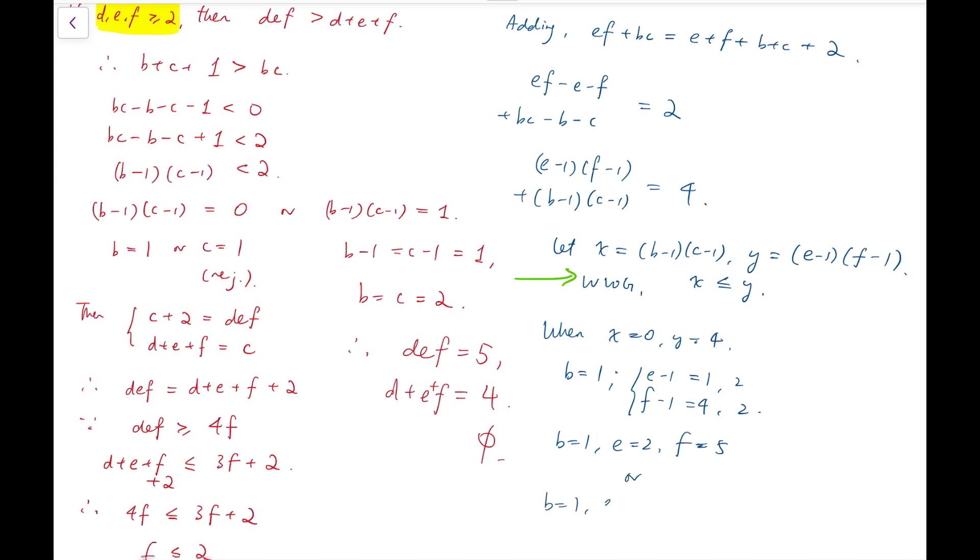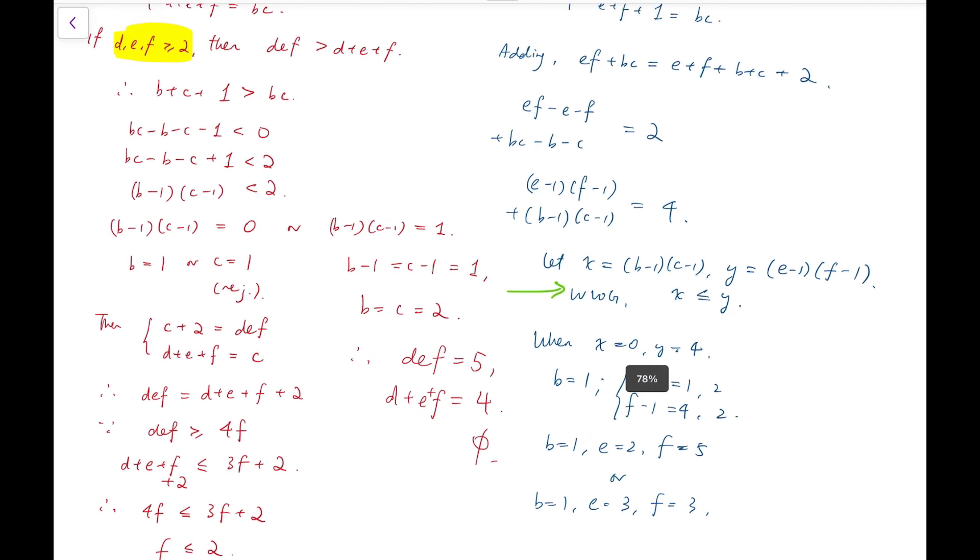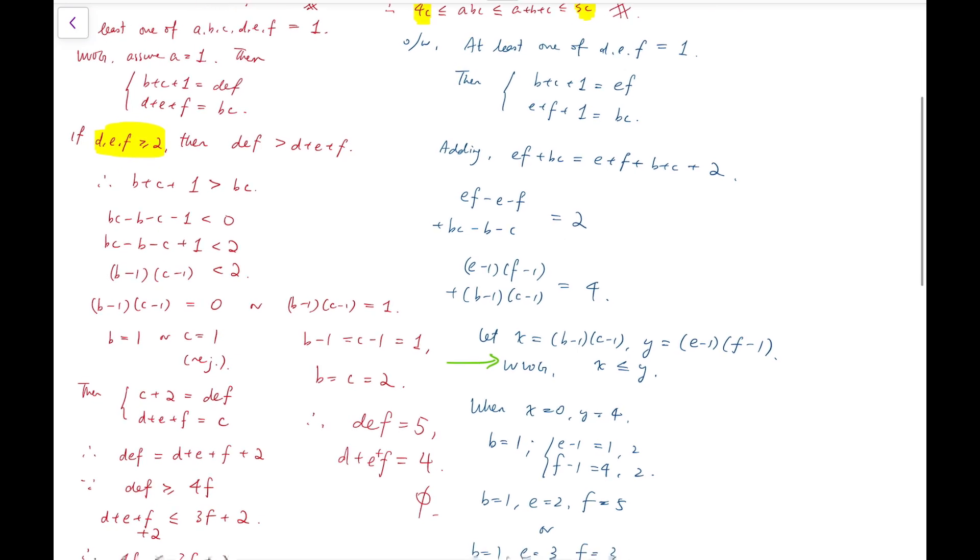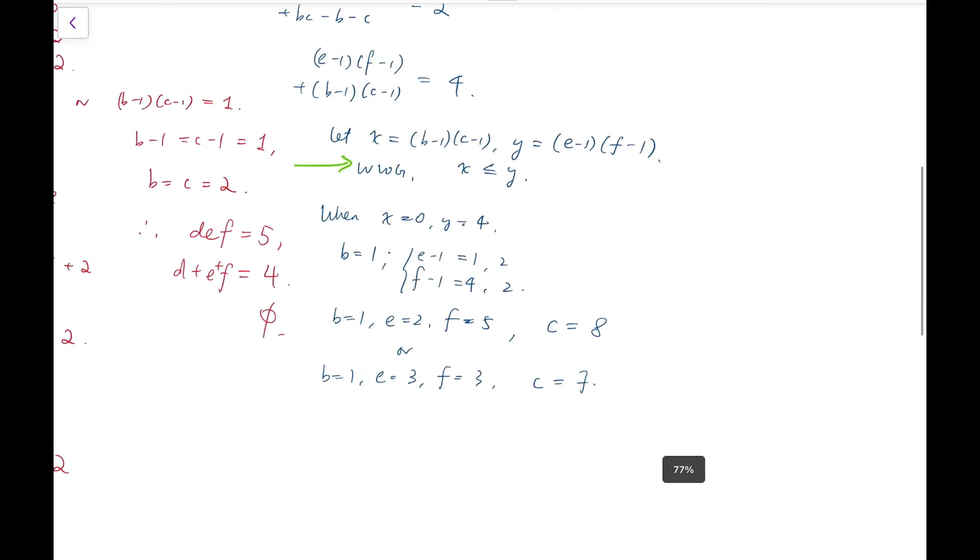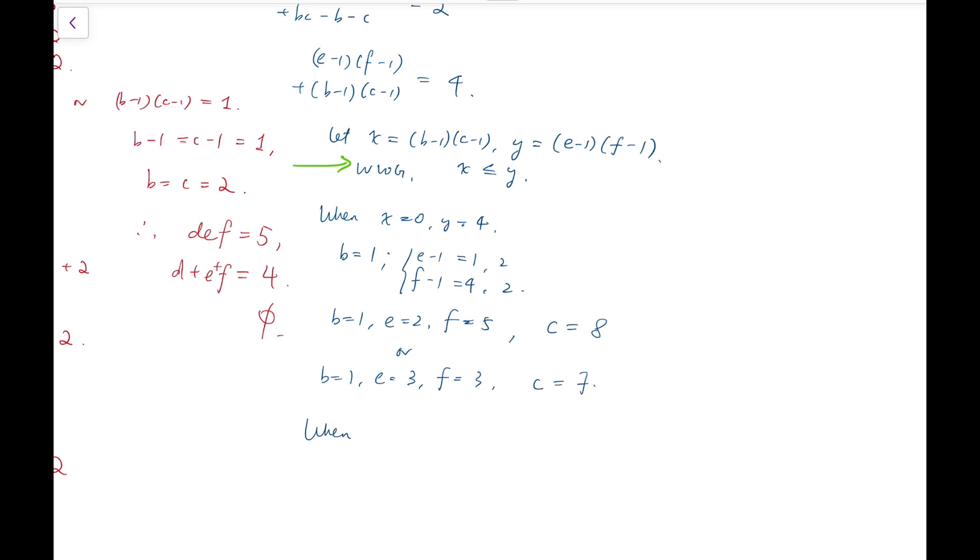So together with the fact that d is 1, I forgot to write that at the top, then we'll have c equals to 8 for this case, and c equals to 7 for this case. Also when x equals to 1, y equals to 3, then I will have b equals to c equals 2. But again, we know that this will lead to no solution.